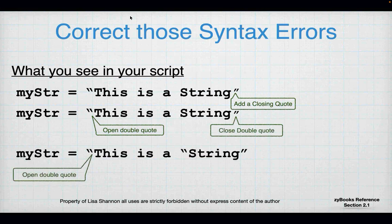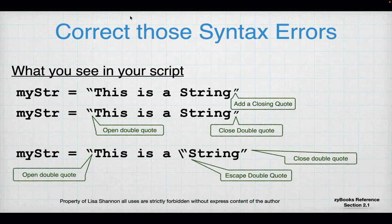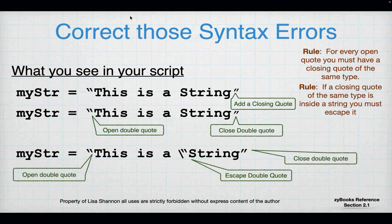For the final one, we have an opening double quote and a closing double quote — that's correct. In the middle we have a double quote that we wanted to use as a character rather than a delimiter. How do we handle that? We escape the double quote. It's a special indicator to Python that says, even though you as Python have a different use for a quote, right now I want to use it as a character — not as the opening or closing of a string. And if you have a quote of the same type inside a string, you're going to have to escape it.